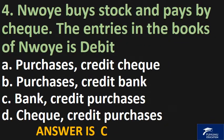Why A buys stock and pays by check. The entries in the books of Why A is: A. debit purchases, credit check bank, B. purchases credit bank, C. bank credit purchases, D. check credit purchases. The answer is C.